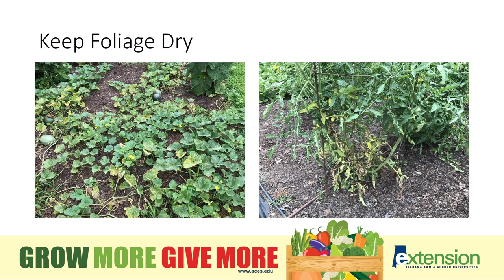The next tip is to keep the foliage dry. Avoid overhead watering, especially in the evening. Water on the leaves provides conditions for infection by bacterial and fungal pathogens. The longer the leaves are wet, the greater the chance that you're going to get infected leaves. Instead, use drip irrigation or water by hand without wetting the leaves, focusing on watering the plants around the base of the plant. Also, try not to walk through the garden when the foliage is wet. You can actually spread disease by picking up spores on your clothing and spreading them from plant to plant.